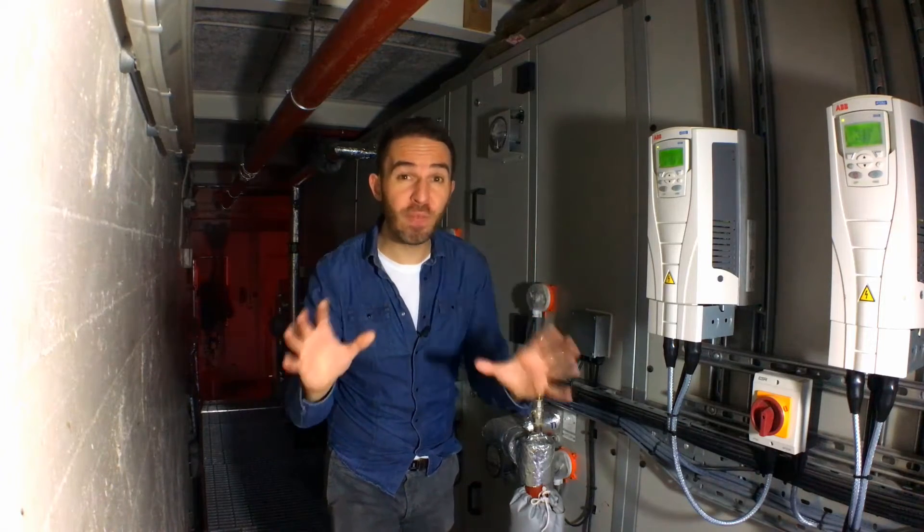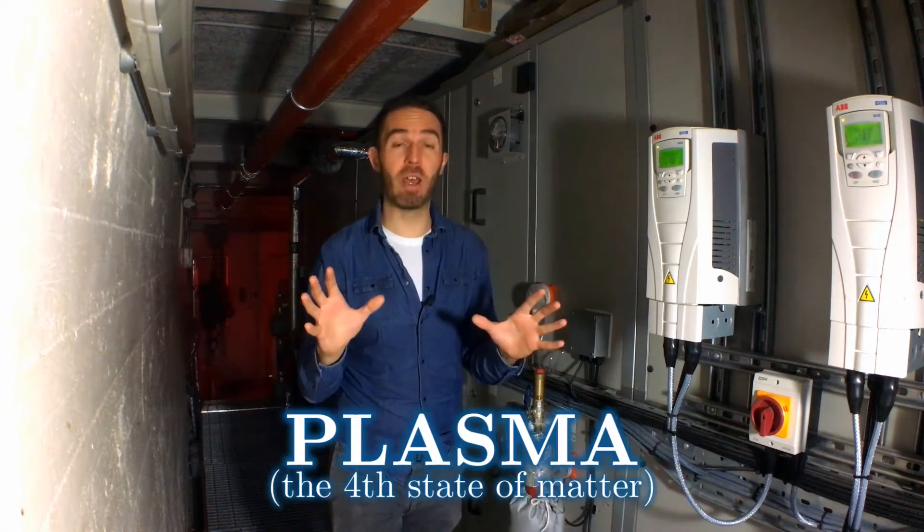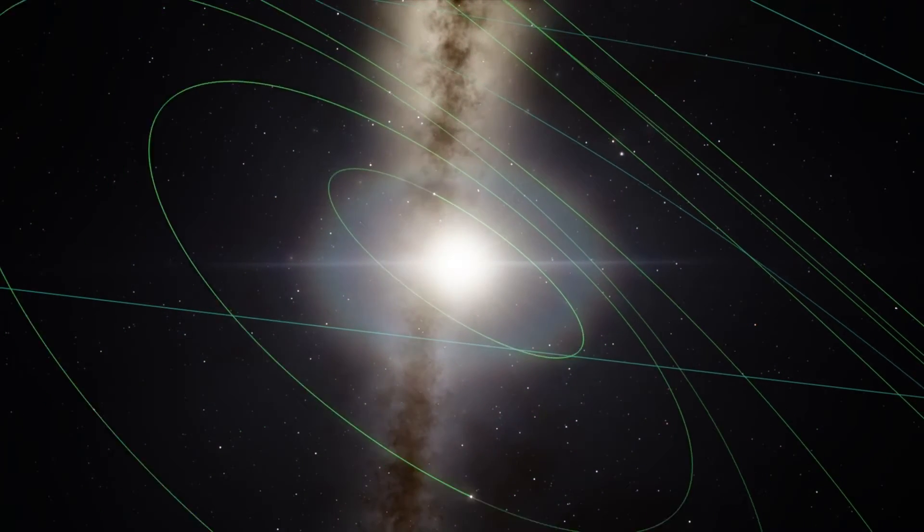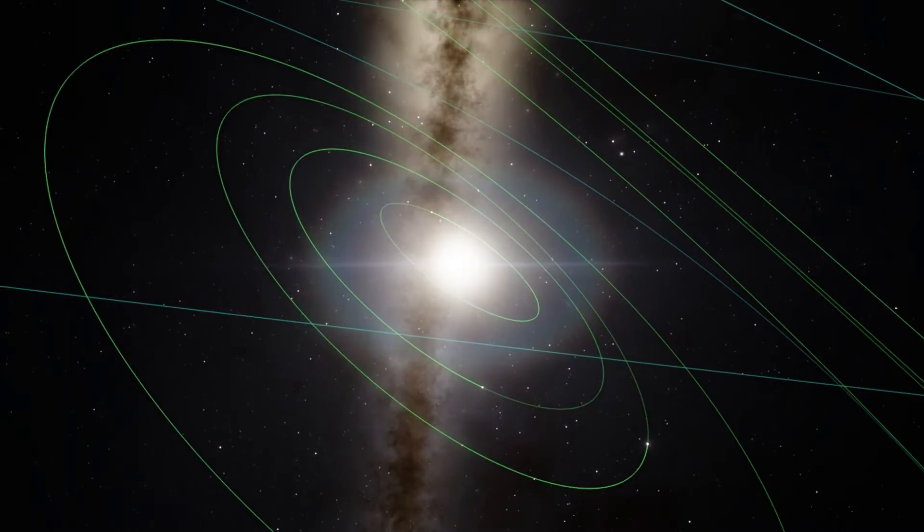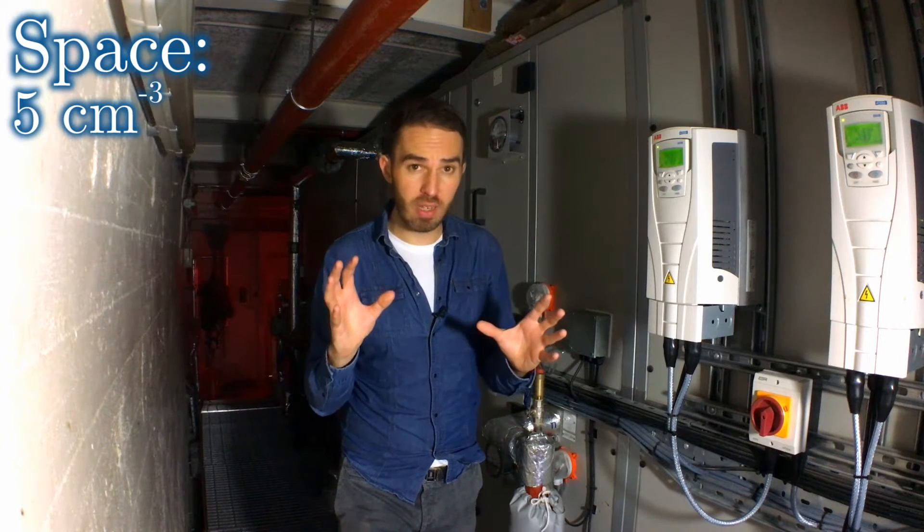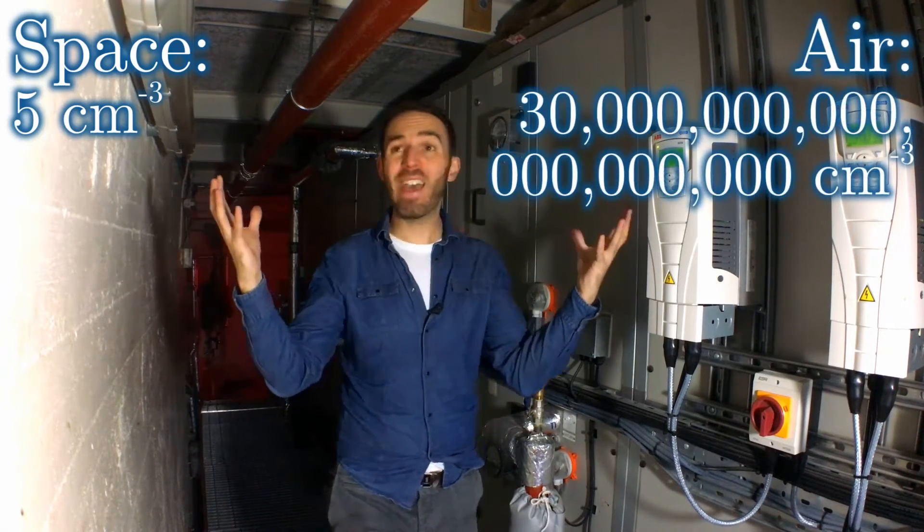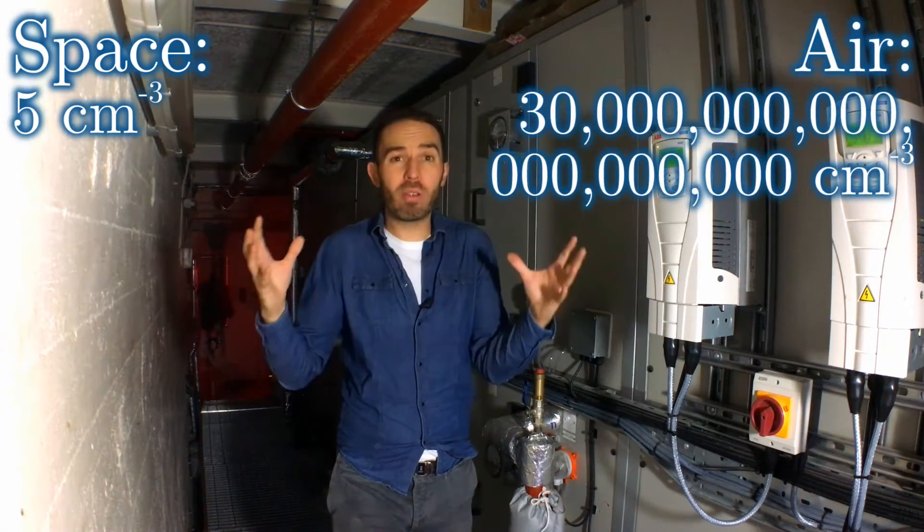Space is filled with plasma. For instance, the seemingly empty space between the planets actually contains five protons for every square centimetre. Compared to the air around me, that is almost nothing. But it's not absolutely nothing.